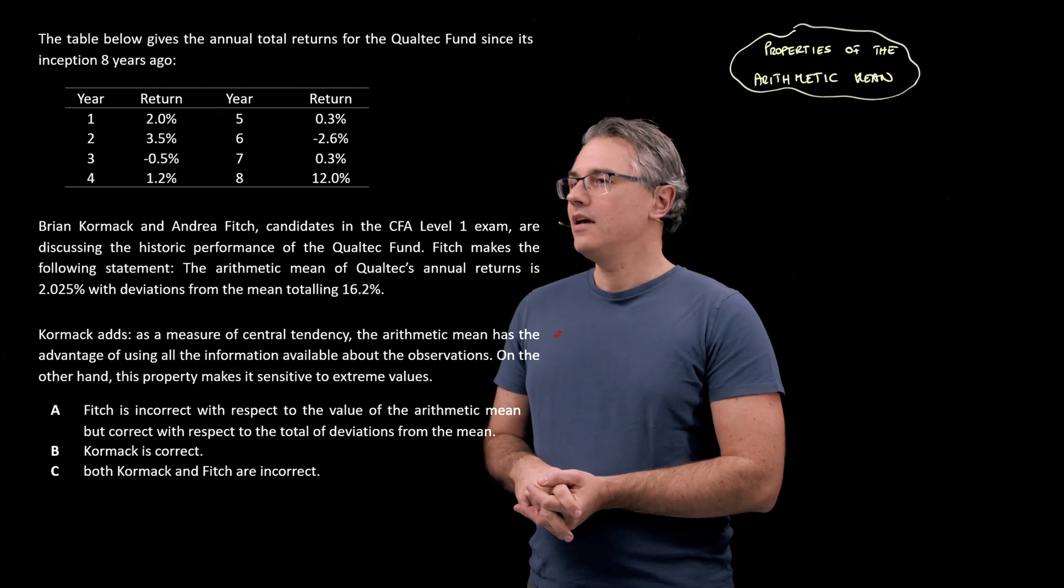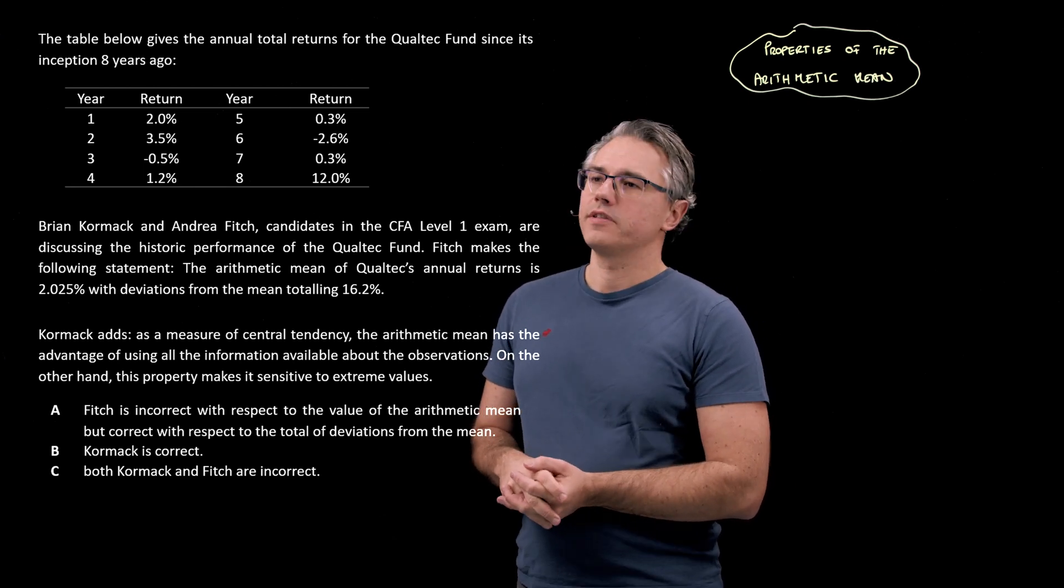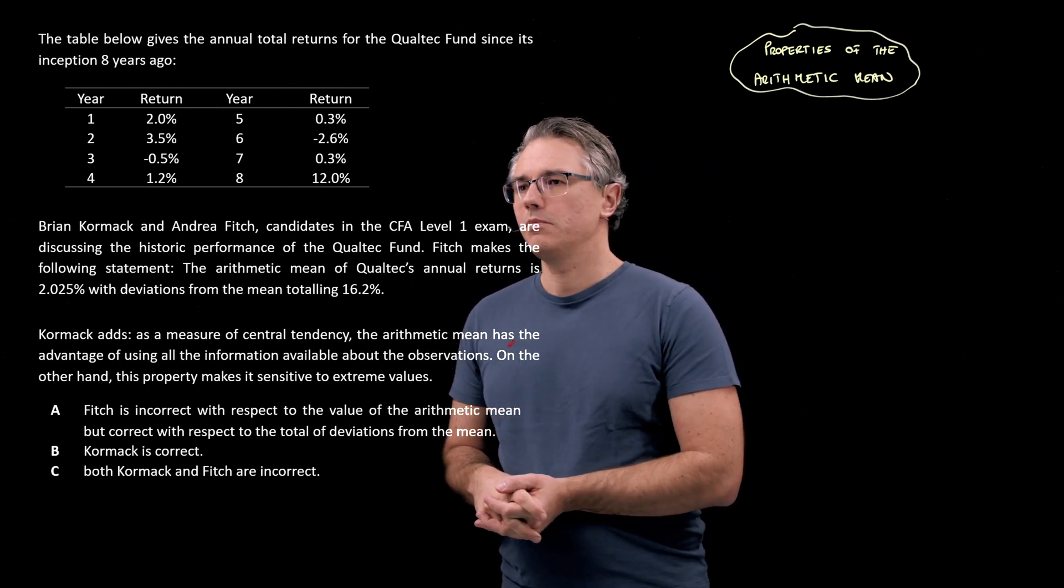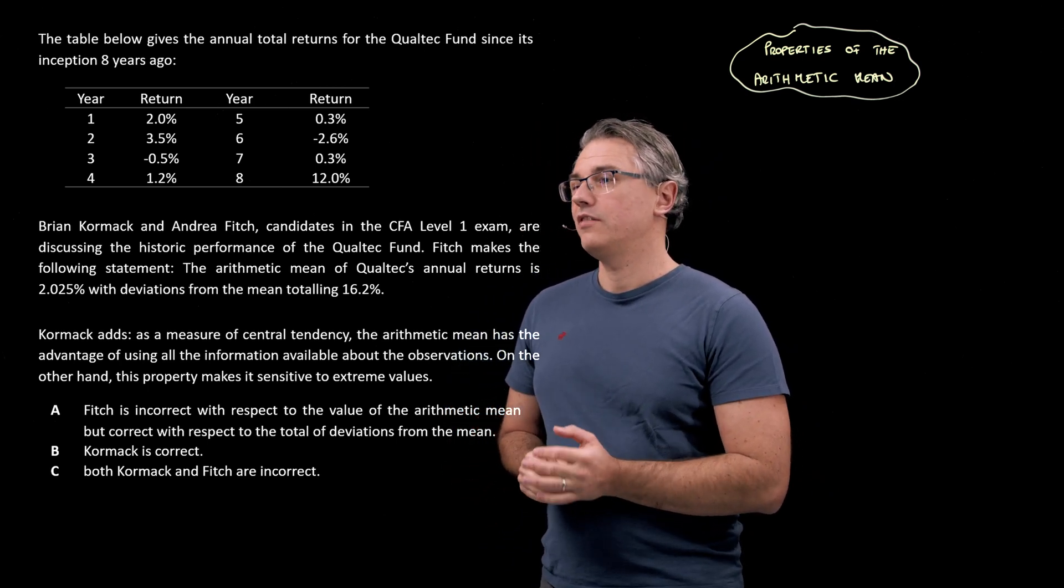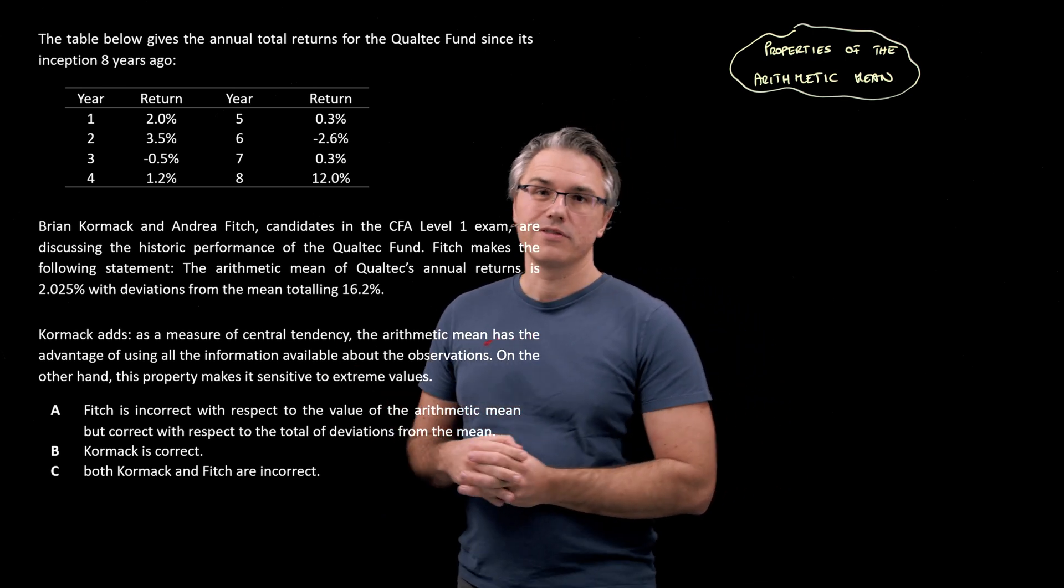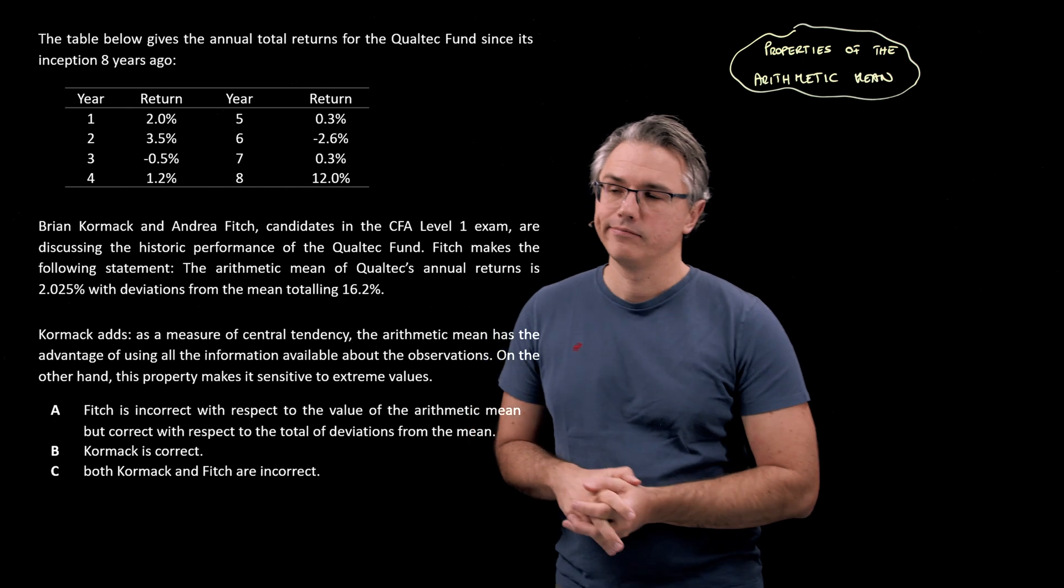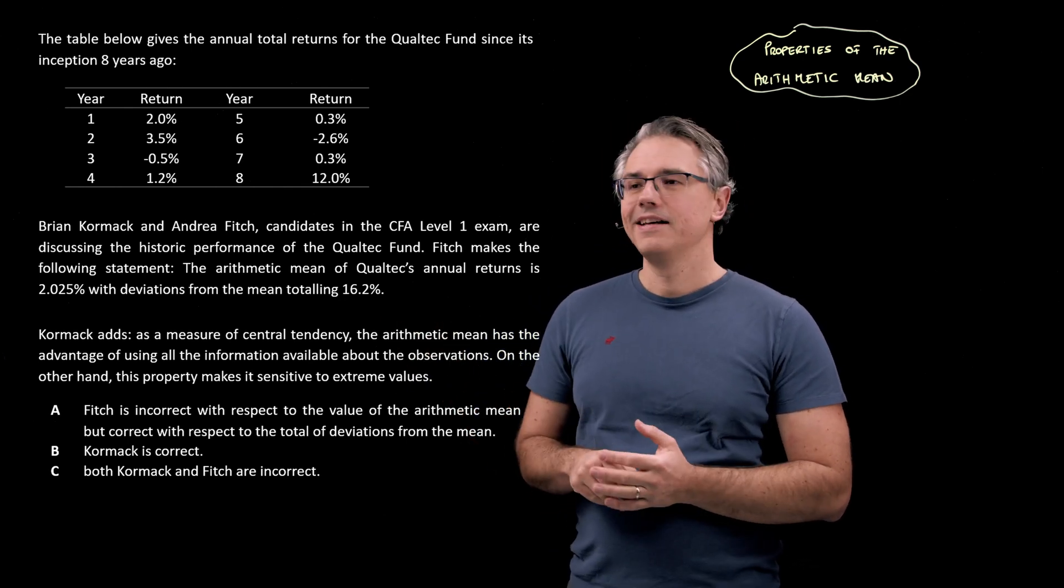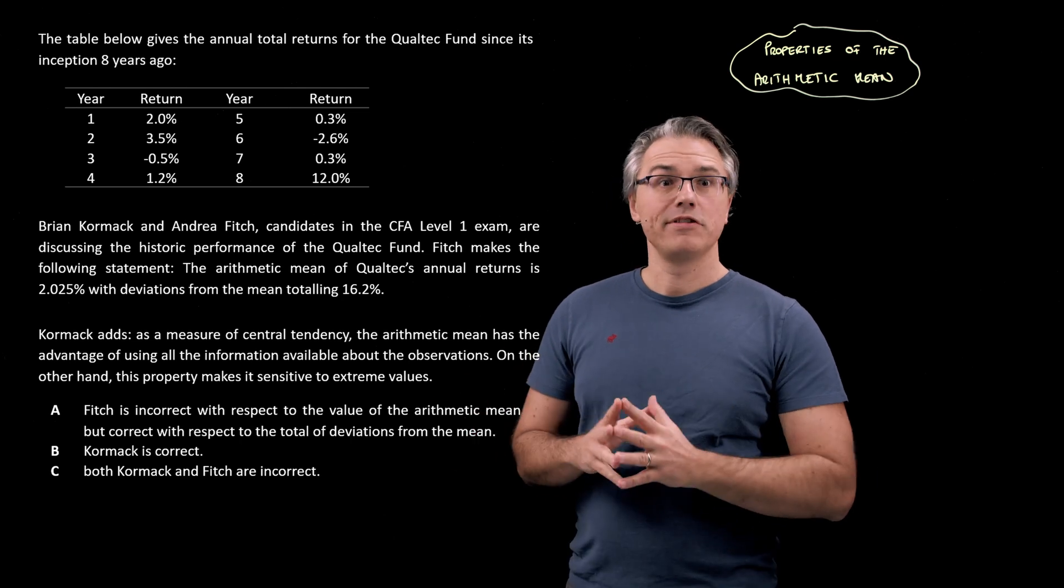Fitch makes the following statement: The arithmetic mean of Qualtech's annual return is 2.025, with deviations from the mean totaling 16.2%. And Cormack adds, as a measure of central tendency, the arithmetic mean has the advantage of using all the information available about the observations. On the other hand, this property makes it sensitive to extreme values. And we've got some possible answers or statements concerning who's right, who's wrong, and with respect to what.